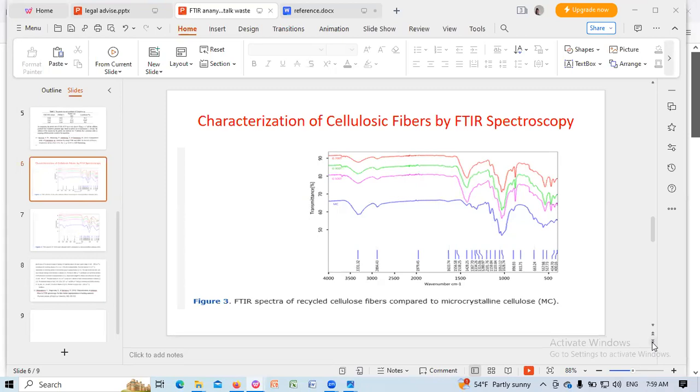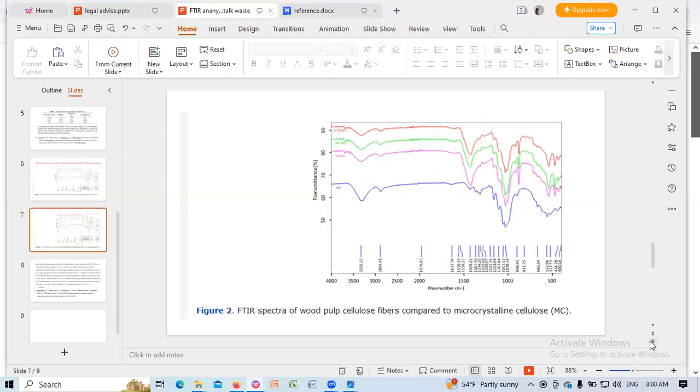Good morning and welcome everybody. Today my discussion topic is the characterization of cellulose fibers by FTIR spectroscopy. The first spectra is the microcrystalline cellulose FTIR spectra, and the second is the FTIR spectra of wood pulp cellulose fibers.